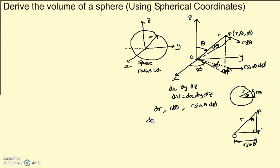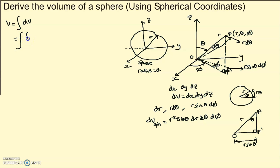So our volume element in spherical coordinates is the product of the three line elements: dV equals r² sine theta dr d-theta d-phi. The volume of our sphere is therefore the triple integral of r² sine theta dr d-theta d-phi, and now we need to find the limits of our integral.